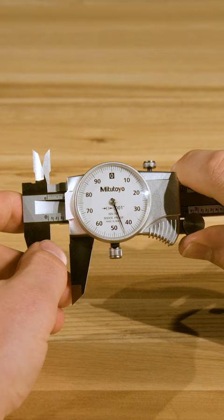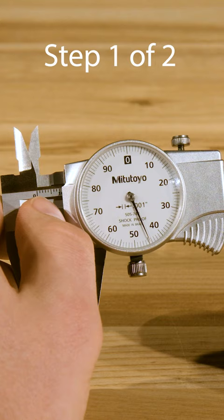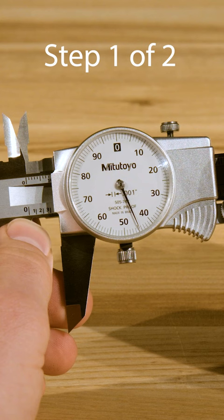There are two sets of graduations on a dial caliper. On an inch caliper like this one, the main scale is marked in 0.1 inch intervals and is read directly by finding the last line passed by the end of the sliding jaw. The dial is marked in 0.001 inch intervals and is read by identifying the graduation indicated by the hand.